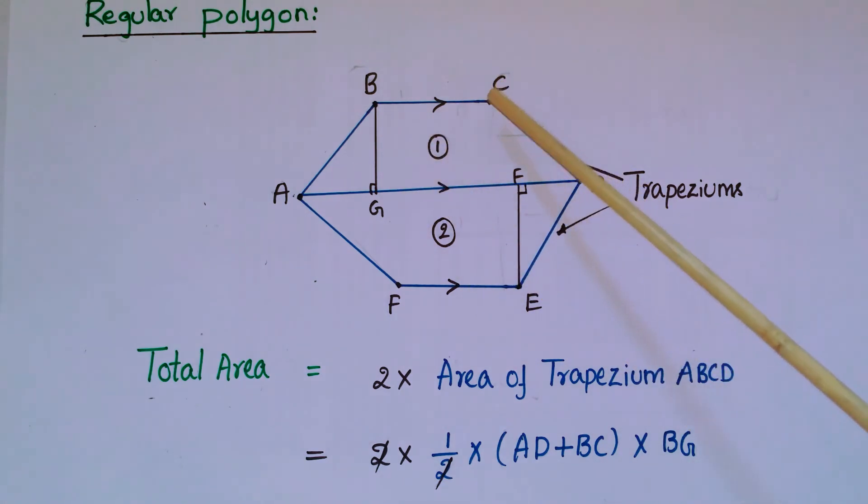If you find area of one trapezium and twice that, then you will get the area of total hexagon. So total area is equal to 2 times area of trapezium ABCD. That is equal to 2 times 1/2 times BC - this is height - and parallel sides here are BC and AD, so AD plus BC.